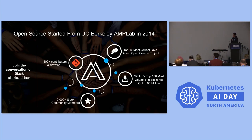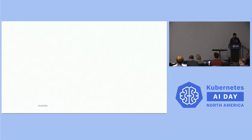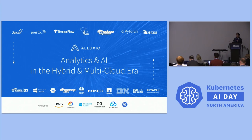I'll now present real solutions to address data locality using our open source software called Alluxio. Alluxio is an open source project started at UC Berkeley AMP Lab since 2014. We now have more than 1200 contributors in our community. Alluxio is a virtualization layer between compute and storage, and also a caching layer to help you address the data locality problem in any stack and environment. Today we're mostly focused on the caching capability of Alluxio.